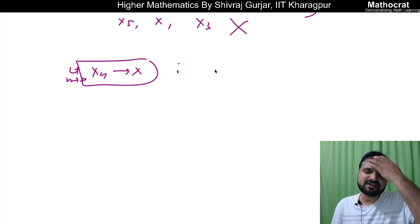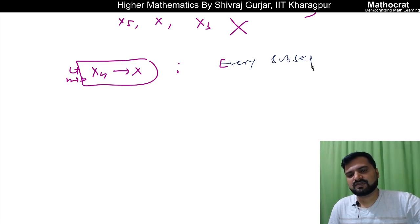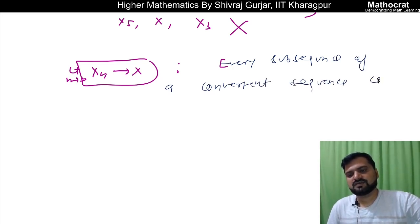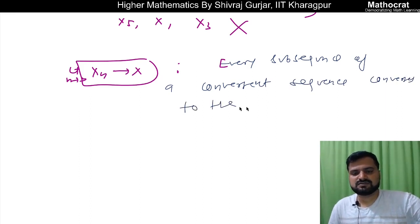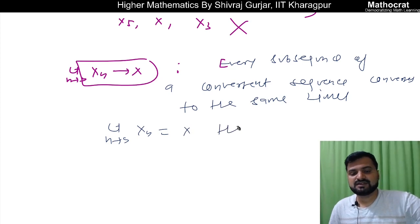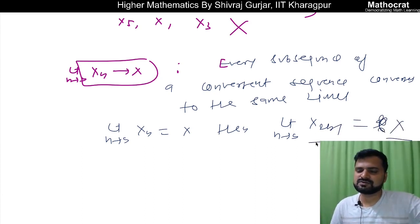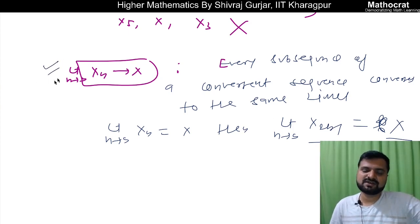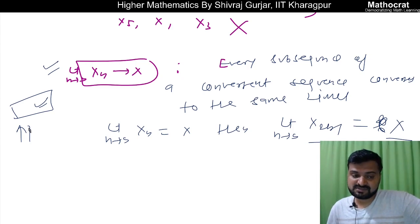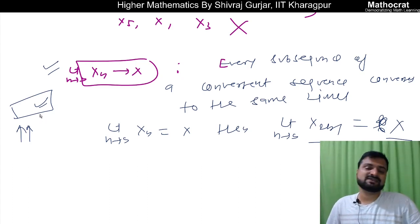For a subsequence, the order of terms of the original sequence must remain the same, and any finite number of terms can be omitted. Now, if a sequence xn converges to x, then it is necessary that all its subsequences also converge to x. So every subsequence of a convergent sequence converges to the same limit.